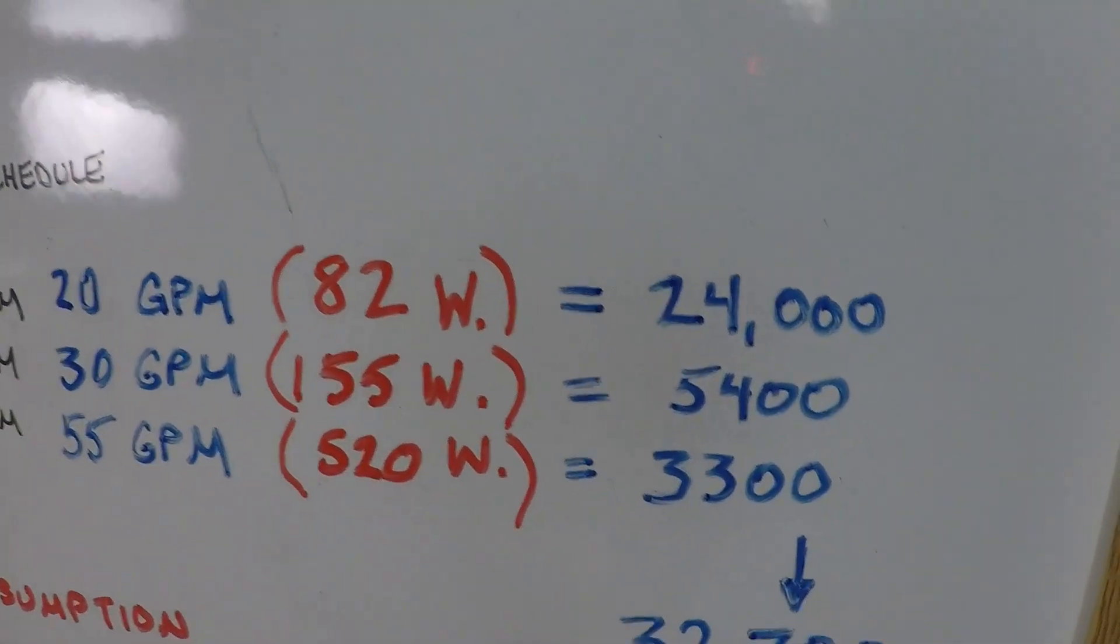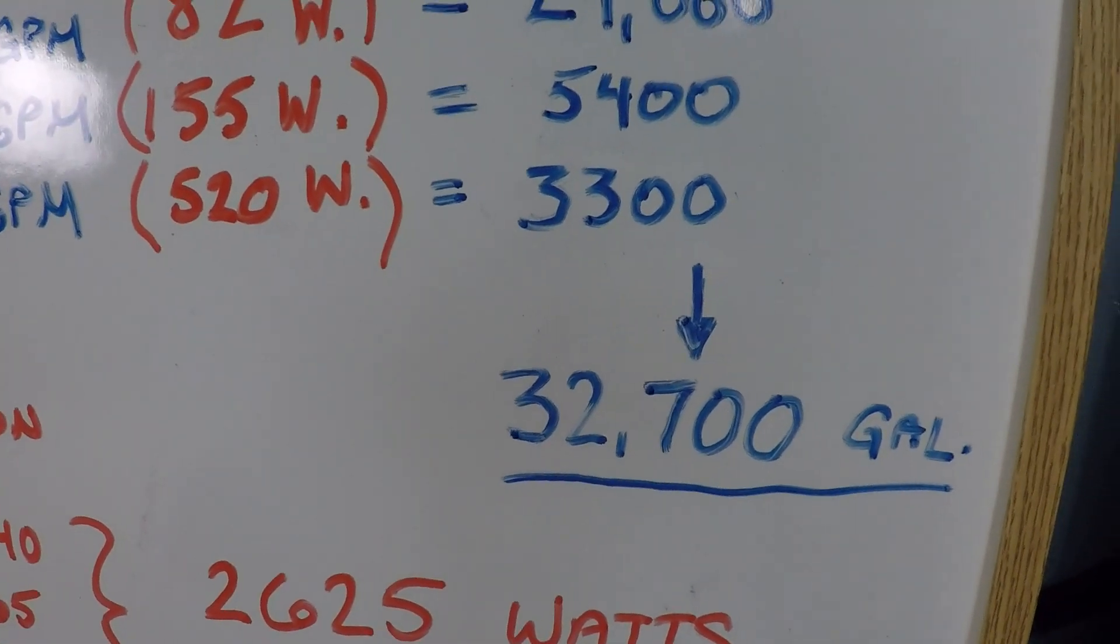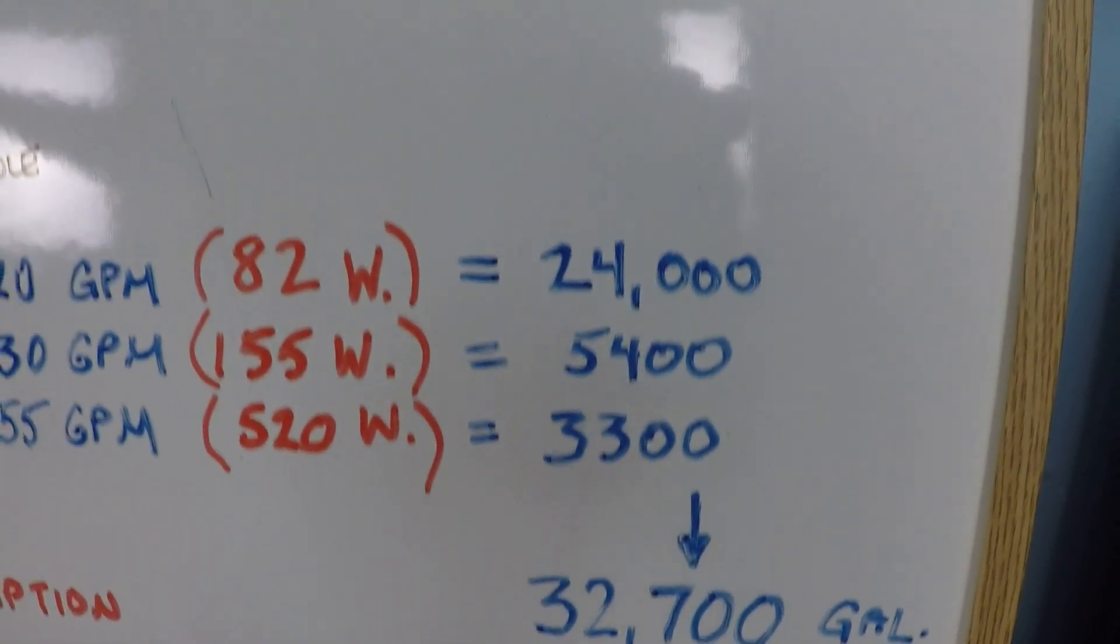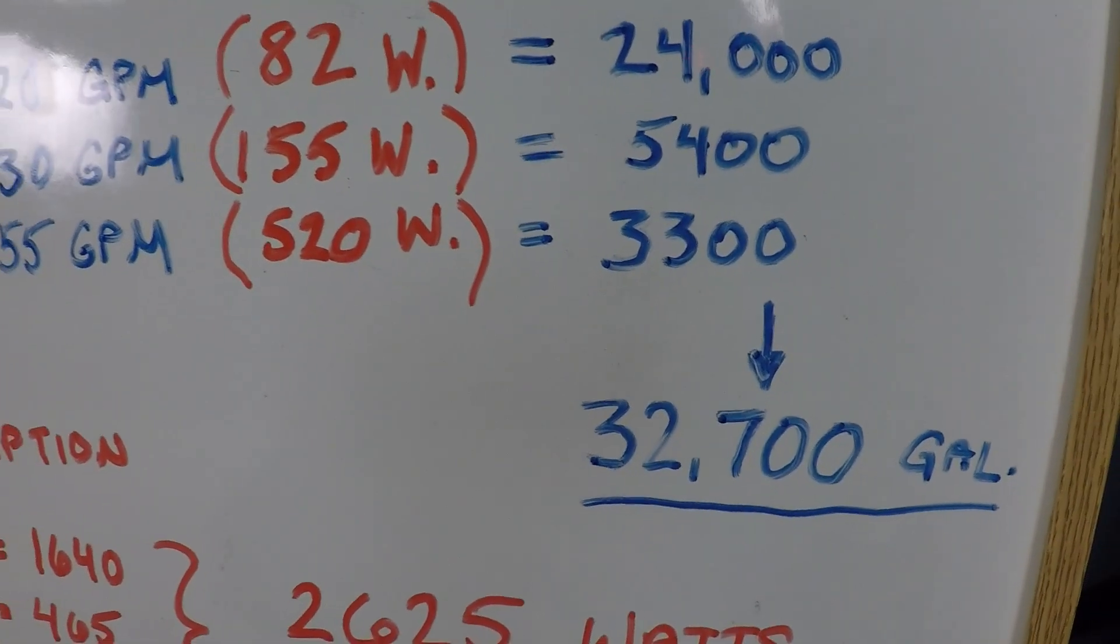In total, we're going to achieve 32,700 gallons of filtered water over a day. Our goal was 31 and change, so we definitely achieved our goal here.